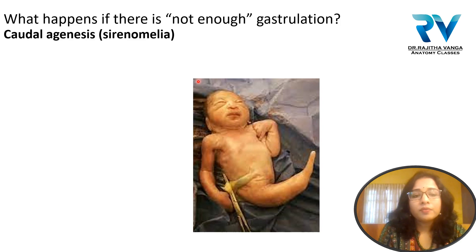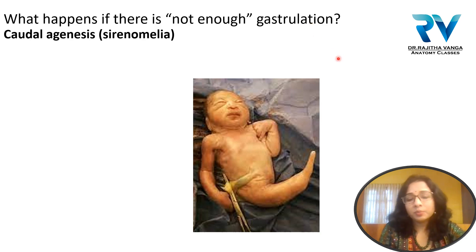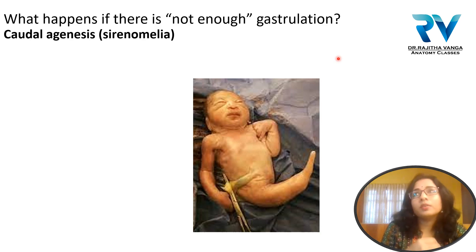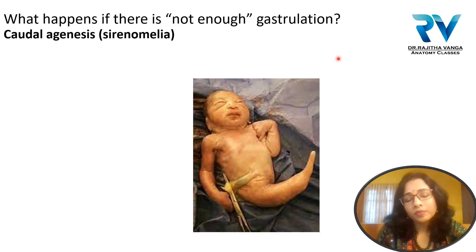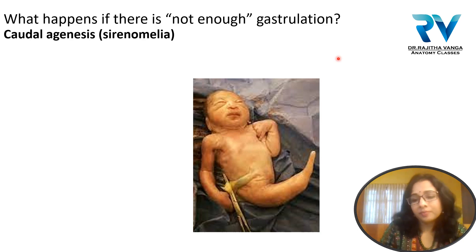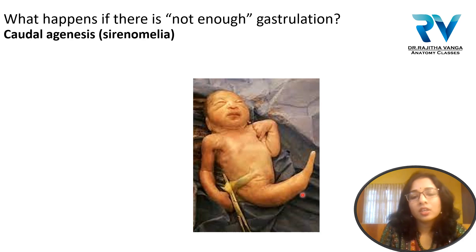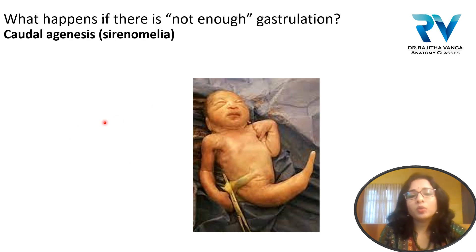If there is insufficient gastrulation — meaning the primitive streak disappears very early — this causes problems. The primitive streak is a transient structure; it appears on the 14th or 15th day of development and persists until the 5th week of gestation. If the primitive streak disappears earlier than the 5th week, there will be caudal dysgenesis or caudal agenesis, where the lower part of the baby fails to develop properly. This condition is called sirenomelia, or mermaid syndrome. The gene responsible is the bone morphogenetic protein (BMP) gene, a member of the TGF-beta family.